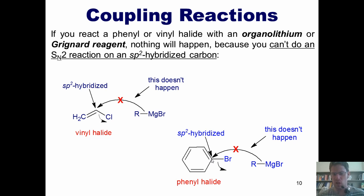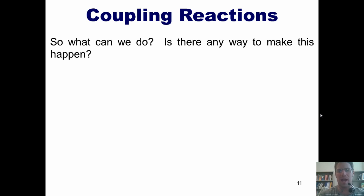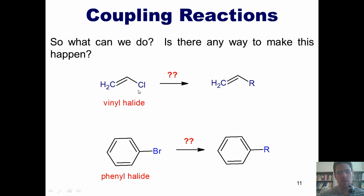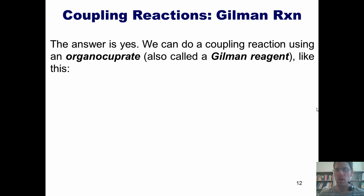The reason is because sp2 hybridized carbons just have too much electron density. So what can we do? Is there any way to take a vinyl halide or a phenyl halide and replace the halogen with some kind of hydrocarbon chain? As it turns out, the answer is yes. We can do this type of transformation, and it requires one of various types of reactions that we call coupling reactions. The first of those uses an organocuprate, also called a Gilman reagent.